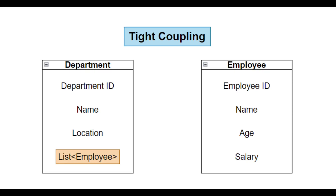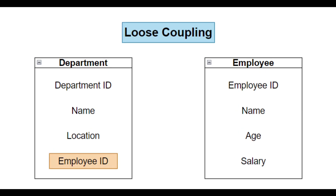If we make a change in our Employee class, we have to update Department as well. It could be that in some rare scenarios you want your code to be tightly coupled, but it is not conventional and it should not be a habit. You can opt for loosely coupled code here as well.